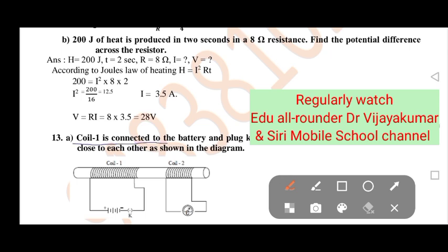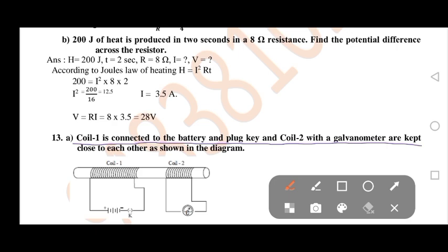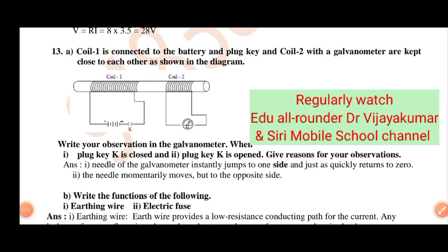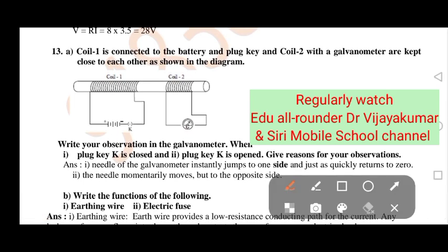Coil 1 is related to the battery and plug key, and coil 2 is kept close to it as shown in the diagram. Write your observation in the galvanometer when plug key K is closed and when plug key K is opened. When plug key K is closed: needle of galvanometer instantly jumps to one side and just as quickly returns to zero. When plug key K is opened: the needle momentarily moves but to the opposite side.